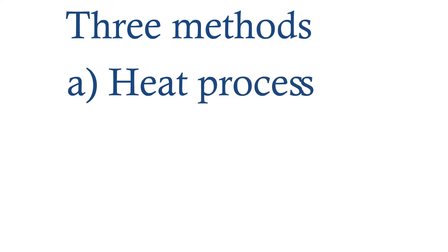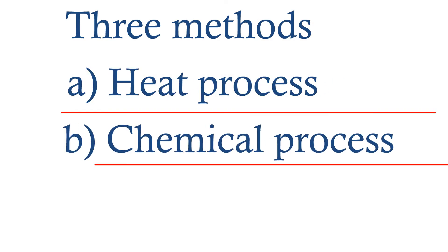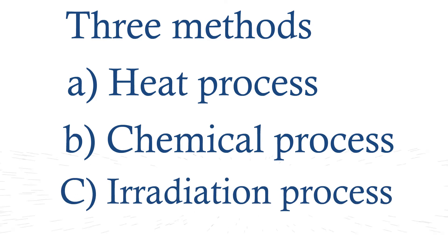Moving on to the sterilization part. Catgut are generally sterilized by three methods: Heat process, Chemical process, and Irradiation process.